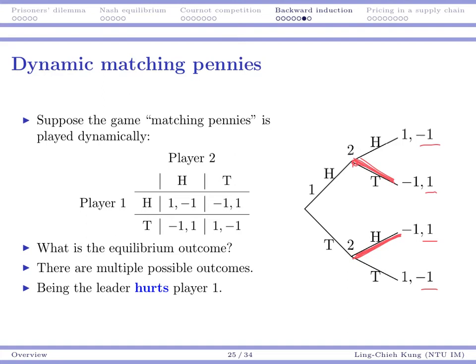So then player one will think, if I choose H, I get negative one. If I choose T, I also get negative one. So in this case, player one feels that it doesn't matter. So we have two possible equilibrium outcomes, HT or TH. And then being the leader is actually hurt. It's actually a bad thing. Just like when you play scissor paper stone, if you are the leader, then you are going to be losing the game. So this example tells us it's not always a good thing to be a leader. This happens in all kinds of dynamic games.